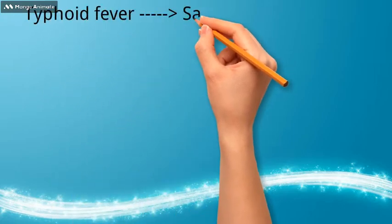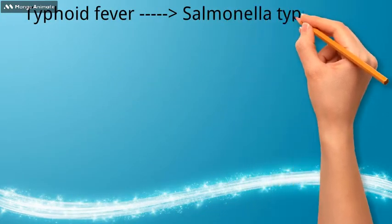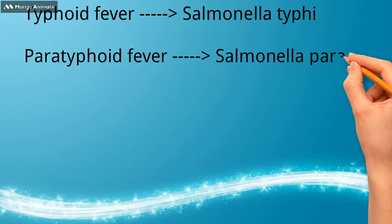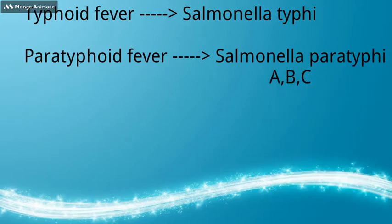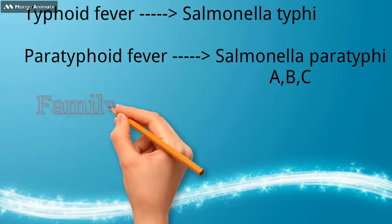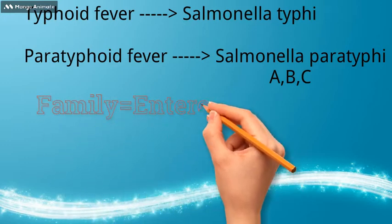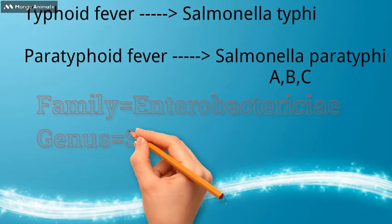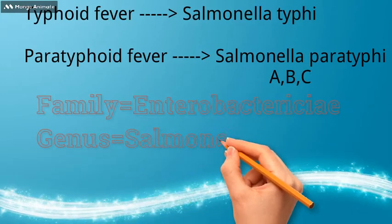Typhoid fever is caused by Salmonella typhi, and paratyphoid fever is caused by Salmonella paratyphi A, Salmonella paratyphi B, and Salmonella paratyphi C. They belong to the family Enterobacteriaceae and genus Salmonella.